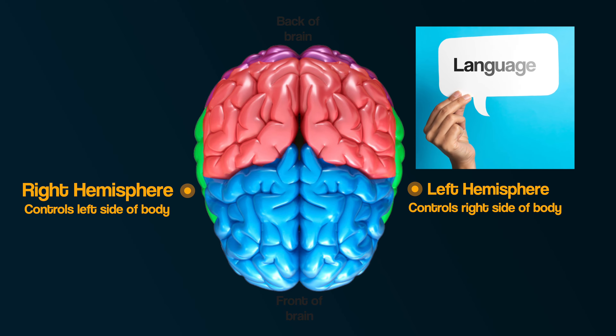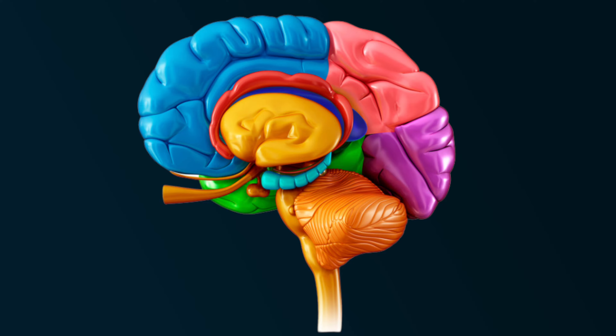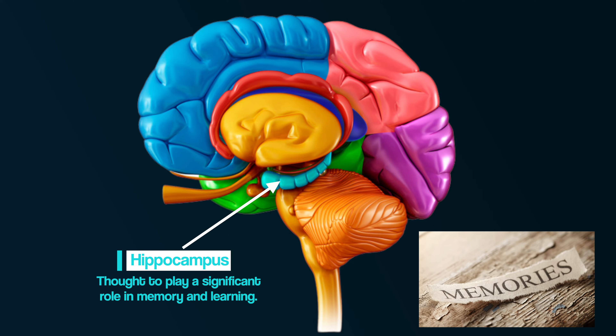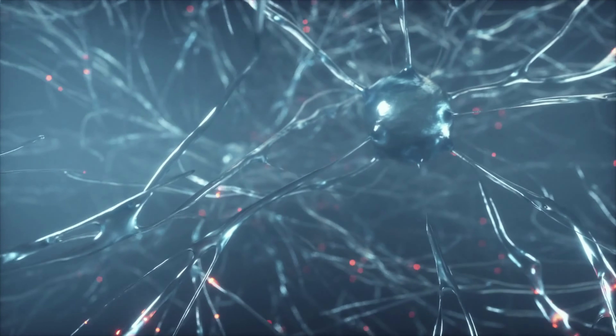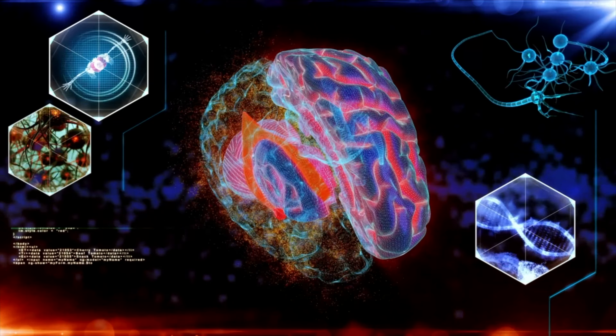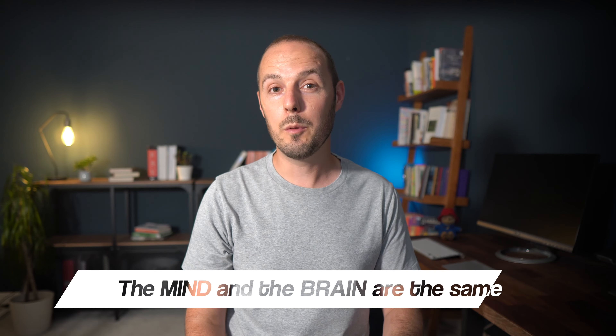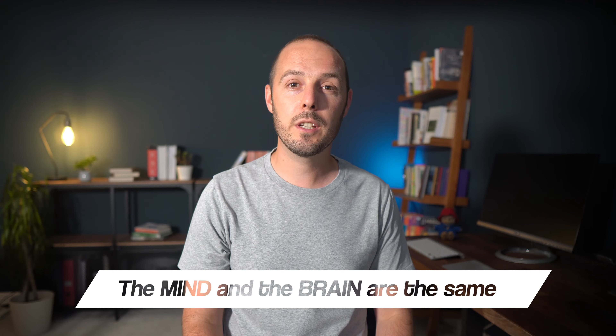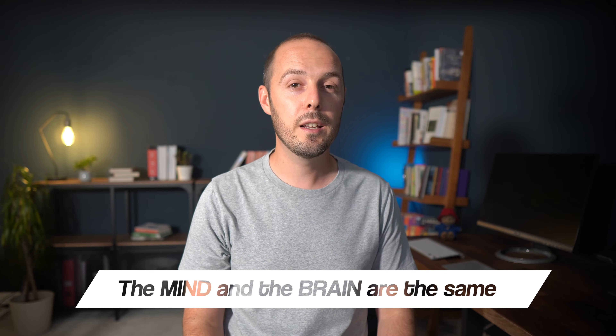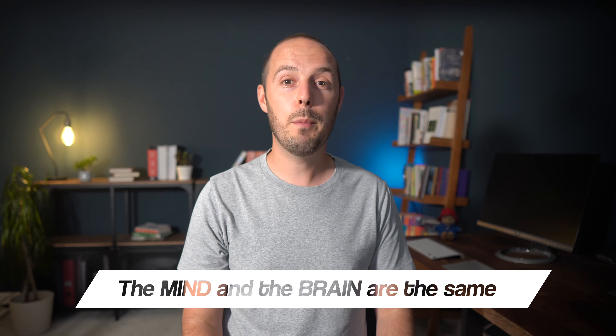Another aspect of the biological approach considers the influence of the brain on behaviour. The outer surface of the brain is known as the cerebral cortex, which is divided into two halves called hemispheres, each subdivided into different parts known as lobes. Each hemisphere and lobe are thought to be responsible for different functions — this is referred to as localisation of function. The frontal lobe is thought to be involved in personality characteristics, decision-making, and movement. The motor area, responsible for controlling movement, is found towards the back of the frontal lobe. The somatosensory area, responsible for processing information from our senses, is in the parietal lobe. The visual area is found in the occipital lobe, and the auditory area, responsible for analysis of speech-related information, is found in the temporal lobe.